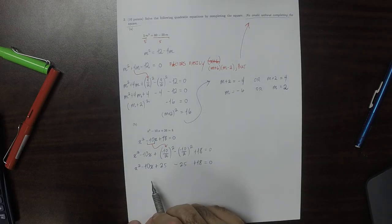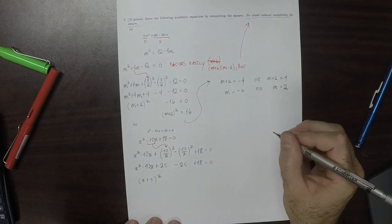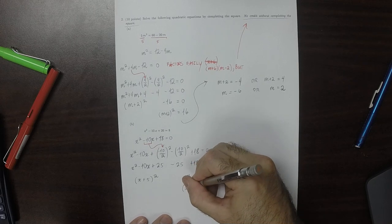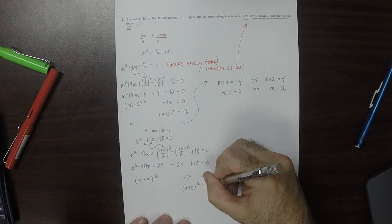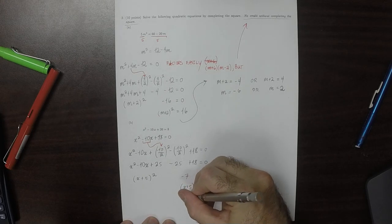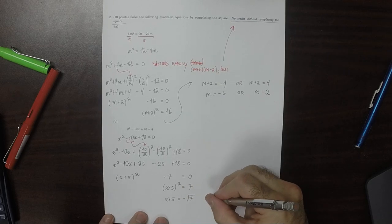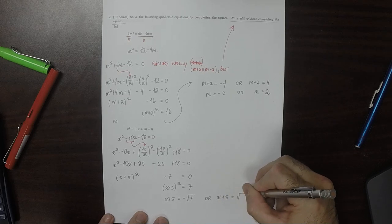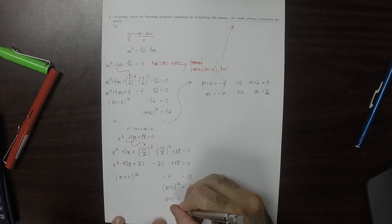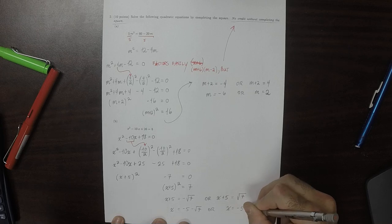The first three terms are a perfect square: x plus 5, all squared. Collecting the constants gives minus 7 equals 0. So x plus 5 squared equals 7. There are two things that would square to 7: x plus 5 is negative square root of 7, or x plus 5 is positive square root of 7. So the two solutions are x equals negative 5 minus the square root of 7, and x equals negative 5 plus the square root of 7.